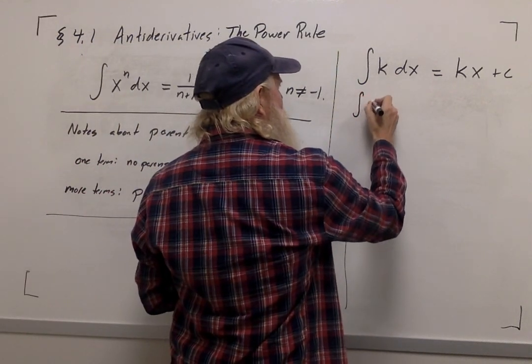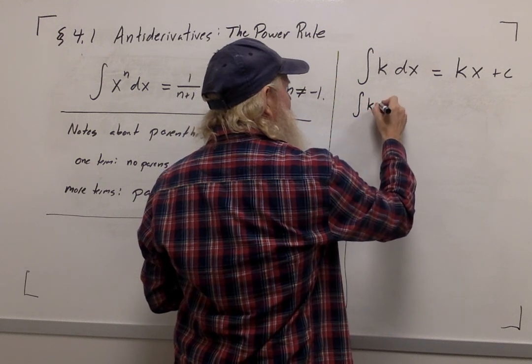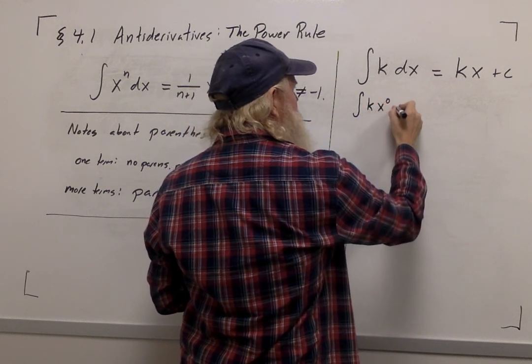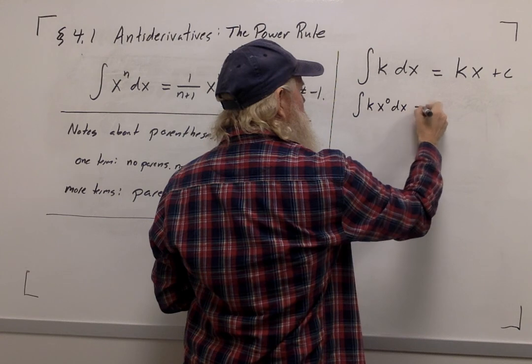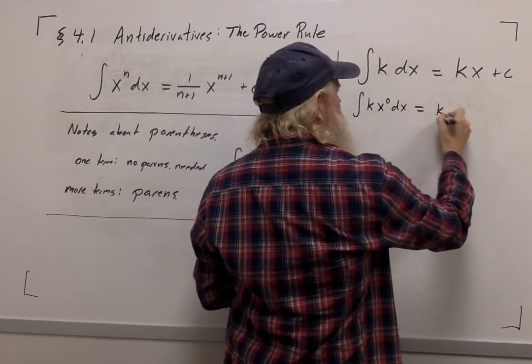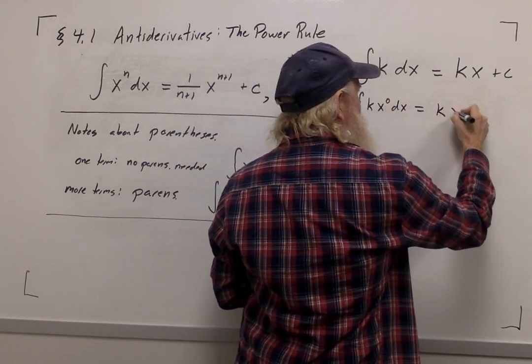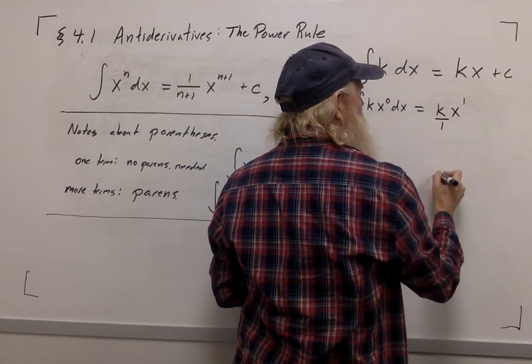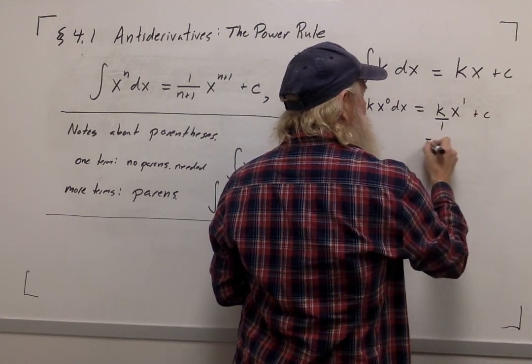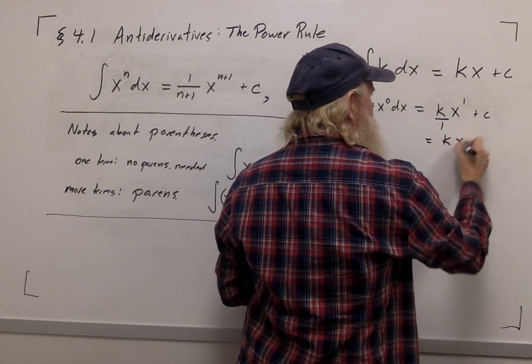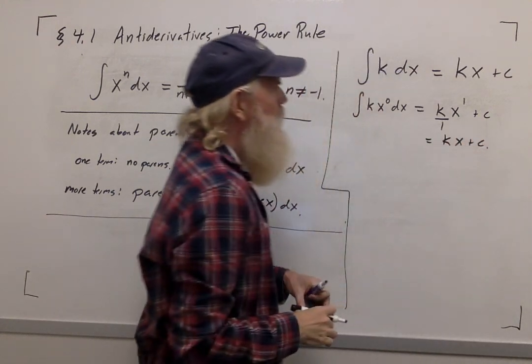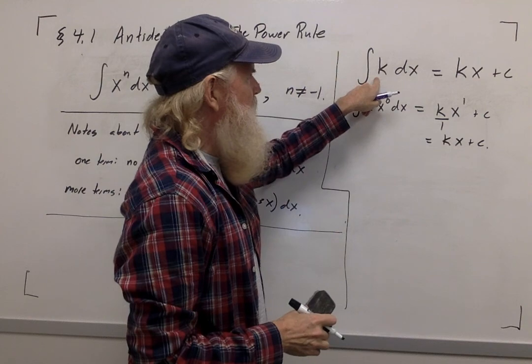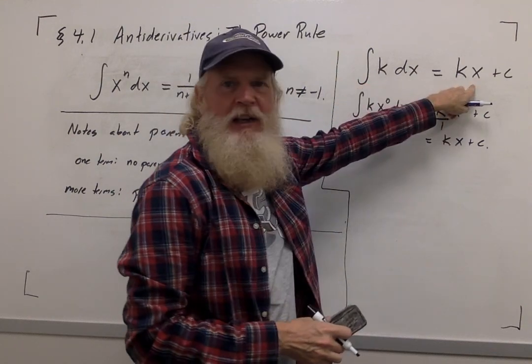We can use the power rule to get the same answer, because this would be the same as the integral of a constant times x to the zero. So I'll add one to the exponent, zero plus one is one, and divide by the new exponent. But it's probably easier simply to remember that the integral of a constant is going to be the constant times x.